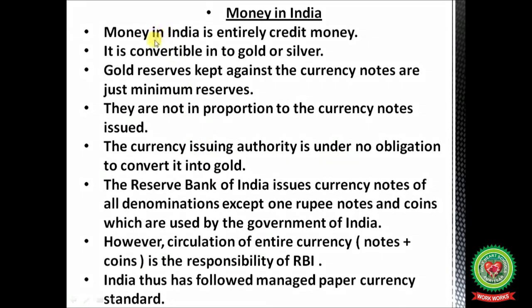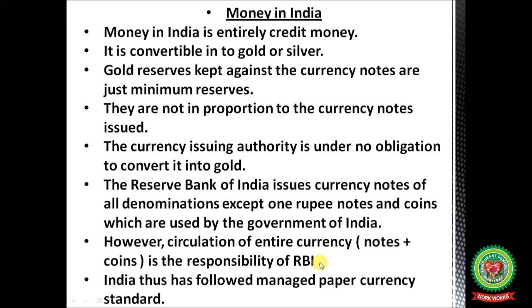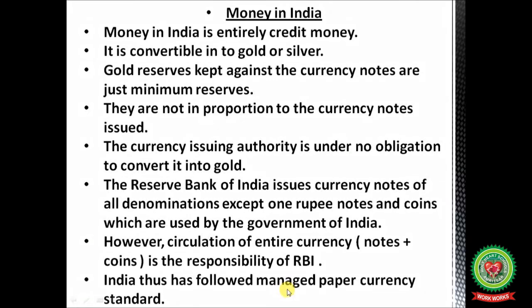Money in India is entirely credit money — it is not convertible into gold or silver; gold reserves kept against currency notes are just minimum reserves, not in proportion to the currency notes issued. The currency issuing authority is under no obligation to convert it into gold. The Reserve Bank of India issues currency notes of all denominations — 100, 50, 20, 2000 rupee notes — except the 1 rupee note and 1 rupee coin, which are printed by the Government of India. However, circulation of all currency — notes and coins — is the responsibility of the Reserve Bank of India. India has thus followed the managed paper currency standard.